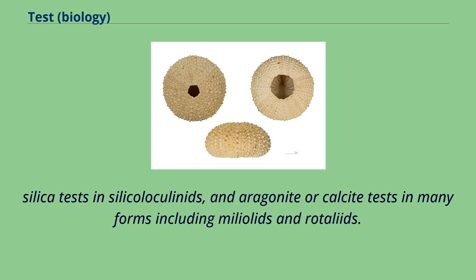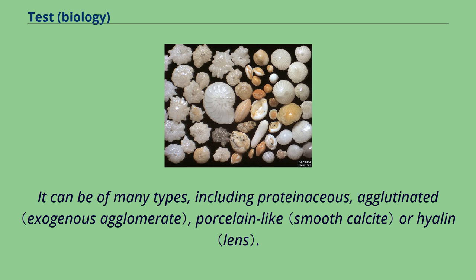Silica tests in silicaloculinids, and aragonite or calcite tests in many forms including miliolids and rotaliids. The test can be of many types, including proteinaceous, agglutinated, porcelain-like, or hyaline.